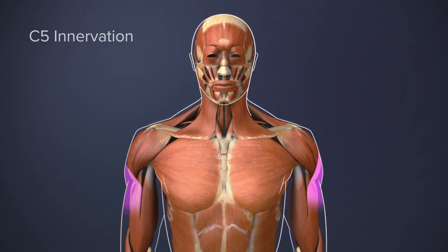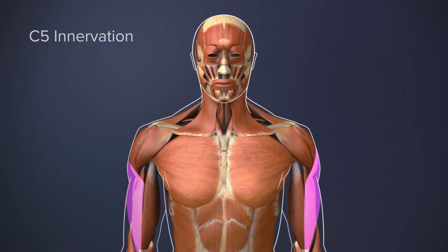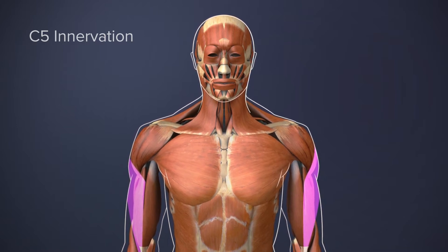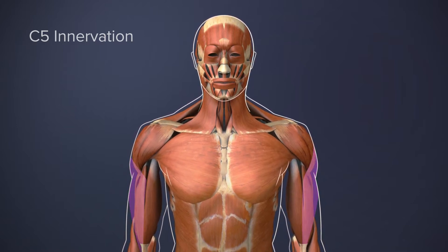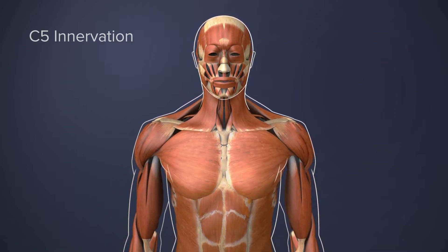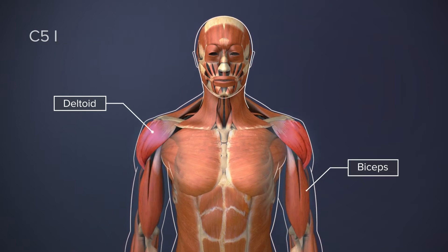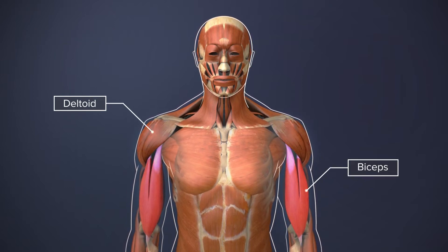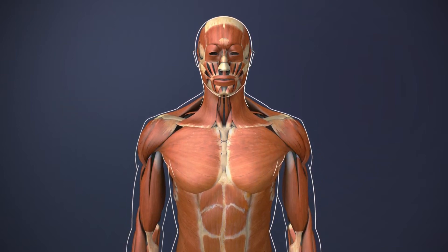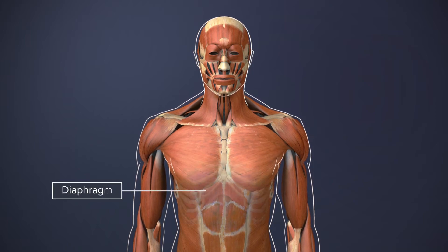The C5 spinal nerve typically innervates skin on the upper arm and sends signals to various muscles, such as the deltoid and biceps. The C3, C4, and C5 nerves also help control the diaphragm for breathing.